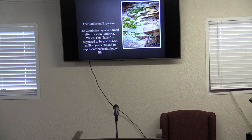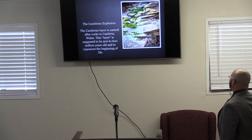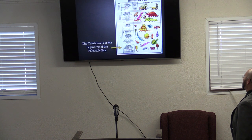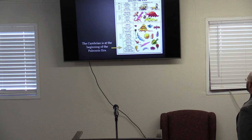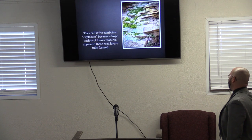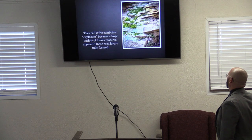The Cambrian explosion. The Cambrian layer is named after rocks in Cambria, Wales. This layer is supposed to be 500 to 600 million years old and to represent the beginning of life. The Cambrian is at the beginning of the Paleozoic era — it's down there at the bottom. This is where life supposedly started. They call it the Cambrian explosion because a huge variety of fossil creatures appear in these rock layers fully formed.